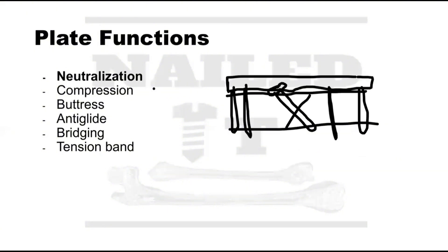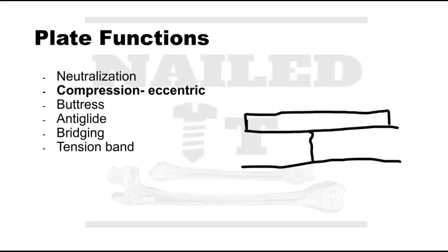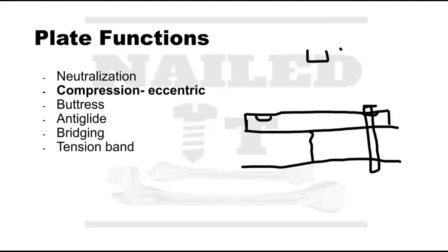With an oblique fracture you could put a screw perpendicular to get compression. But with a transverse fracture, the screw would need to be in the shaft to be completely perpendicular. So there are plates with different designs where you can actually compress through the plate. You put screws on either side of the bone, and the holes in the plate are eccentric — they have more of a slope rather than being square and rigid.